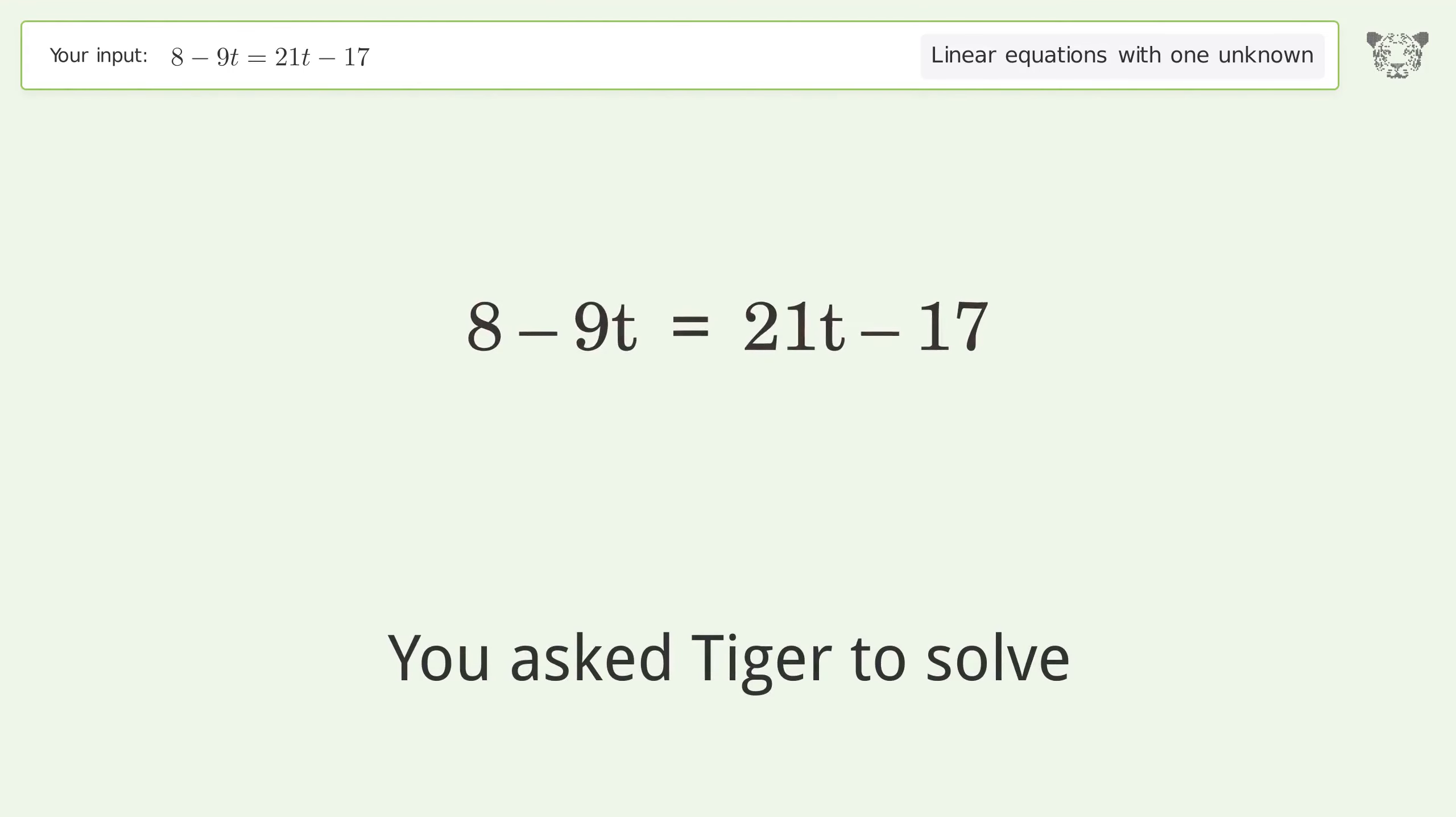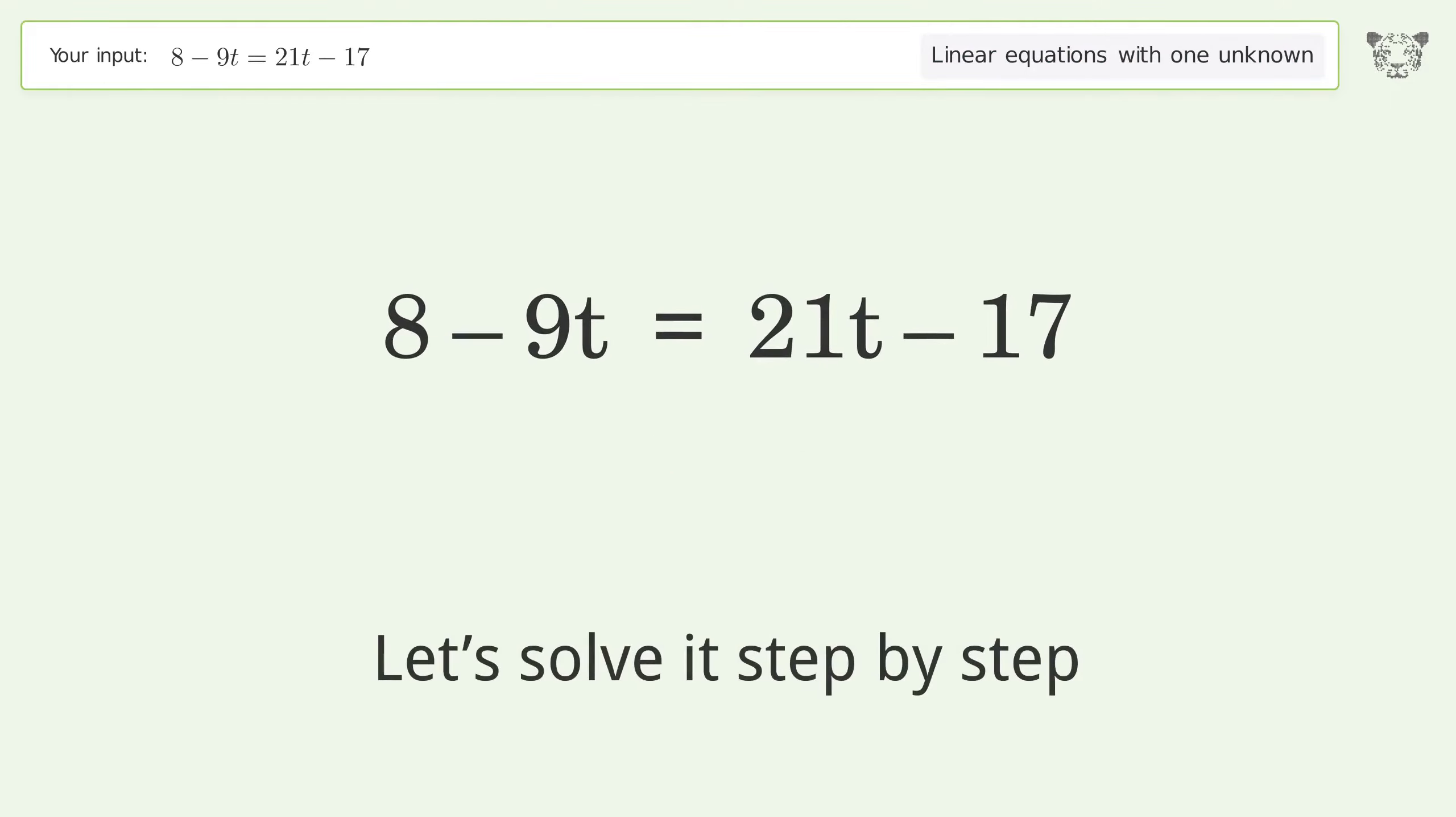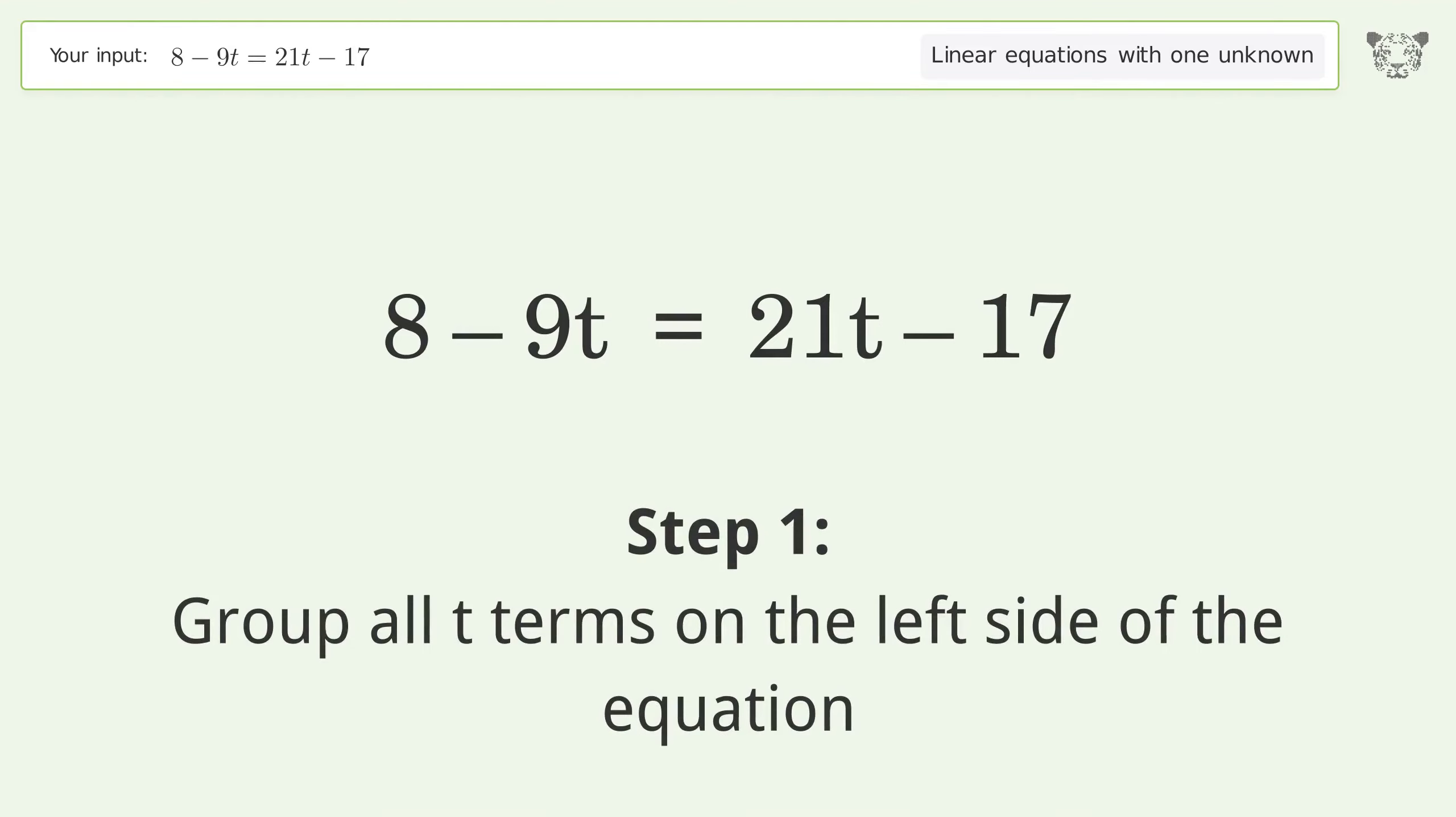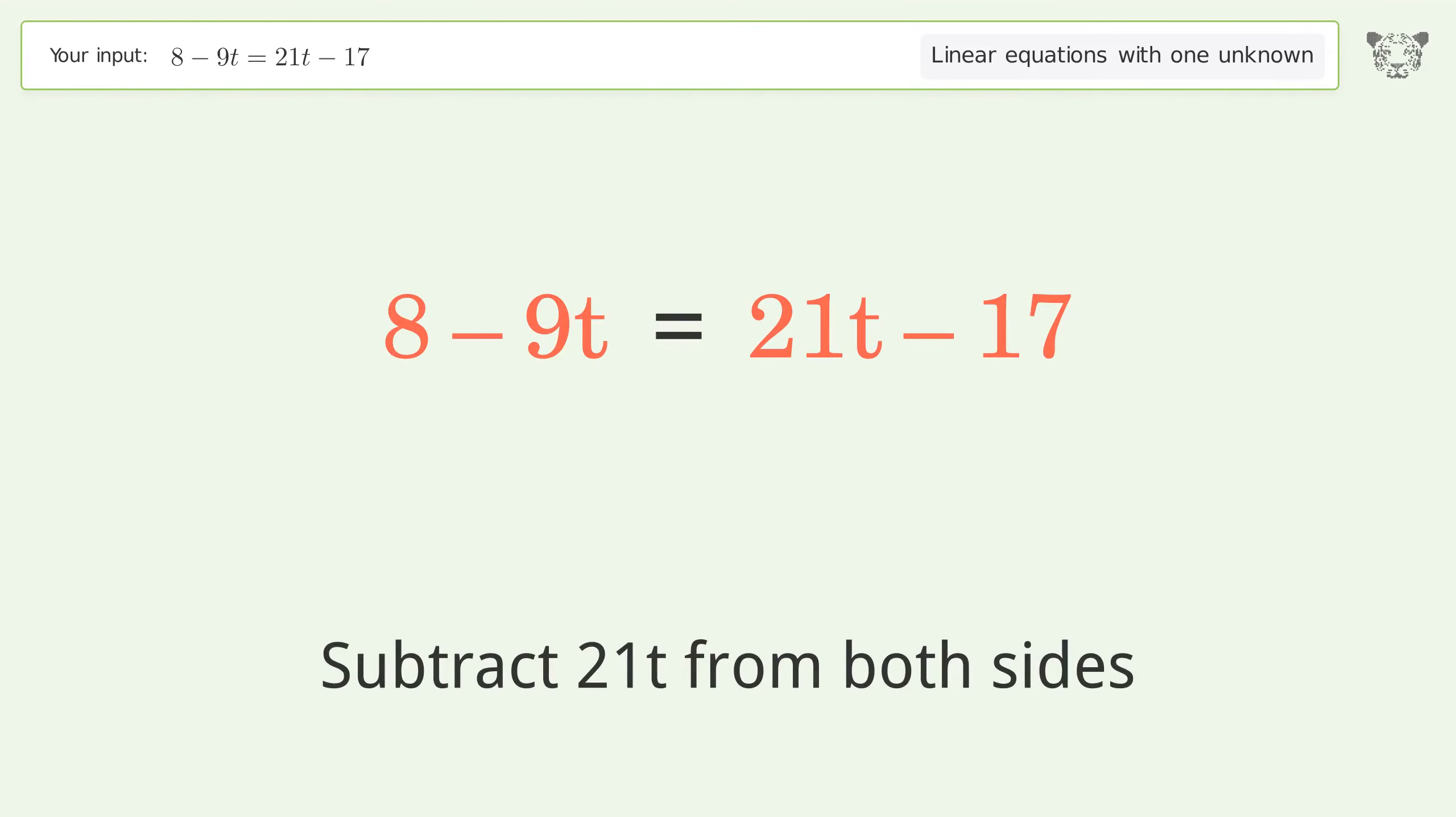You asked Tiger to solve 8 - 9t = 21t - 17, which deals with linear equations with one unknown. The final result is t = 5/6. Let's solve it step by step. Group all t terms on the left side of the equation. Subtract 21t from both sides.